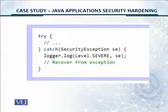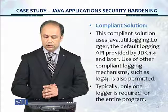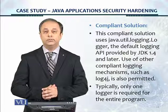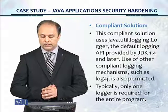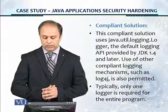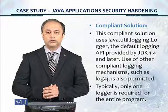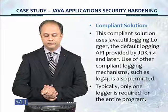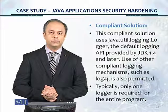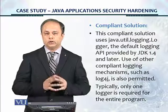This is the correct way to do it. The compliant code is always shown in the blue border on the SEI website. This compliant solution uses Java util logging Logger, the default logging API provided by JDK 1.4 and later. Use of other compliant logging mechanisms such as log4j is also permitted. Typically only one logger is required for the entire program. This was just one control we've seen for Java application security hardening, and you can see the entire set on the SEI website.